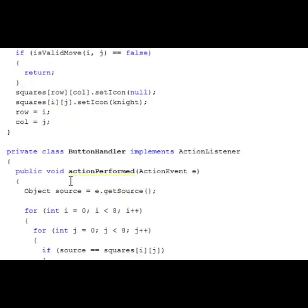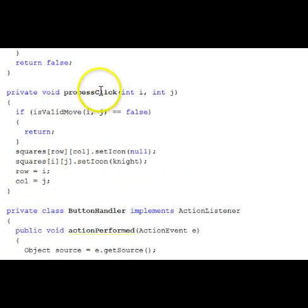Process click is up here. Process click calls another function, is it a valid move for that cell? Is that some place the knight can move to? Is it valid? If it's false, it's not valid, we return, we take no action.